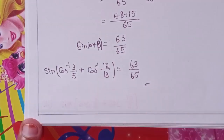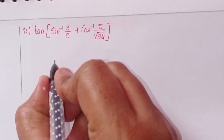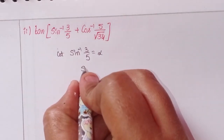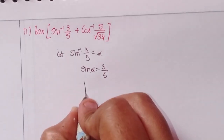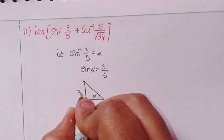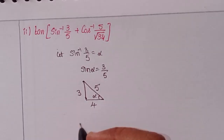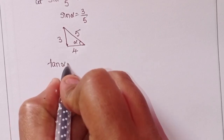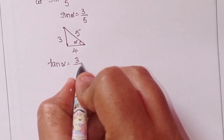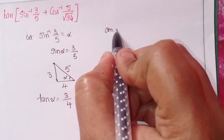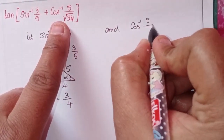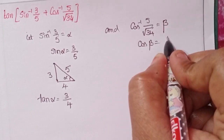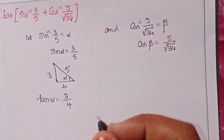For the second problem, let sine inverse 3 by 5 equal to alpha, so sine alpha equals 3 by 5. In the right triangle, opposite by hypotenuse gives the adjacent side as 4, so tan alpha equals opposite by adjacent equals 3 by 4. Also let cos inverse 5 by root 34 equal to beta, so cos beta equals 5 by root 34.